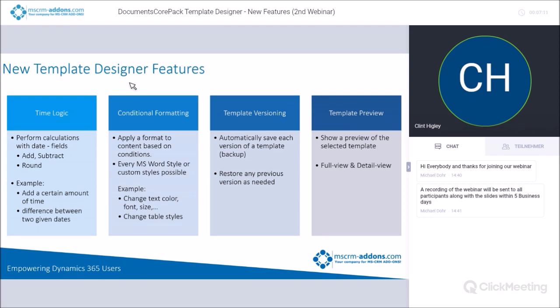The last two features kind of go hand in hand — template versioning is a nice quality-of-life change. If you've used Documents Core Pack before and created templates, I'm sure you've run into a situation where you made a change, the template broke, you contacted support, and then realized you didn't have a backup and had to recreate the entire template. This new feature automatically saves each version of a template — up to 25 previous versions — and you can restore any previous version as needed. Now you don't have to worry about a change breaking your template.